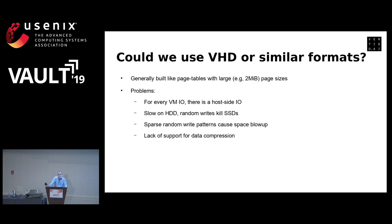We first thought about existing virtual machine storage formats like VHD from Microsoft, but they don't really solve this problem. They're built like page tables with bigger page sizes. The table is empty initially; when you do a write you allocate about 2 megabytes on disk and future writes go there. If you read from an empty page, you get zeros; from an allocated page you get the contents. The problem is it's just a level of indirection — it doesn't remove any of the IOs. If a VM is doing a hundred IOs, the host needs to deliver a hundred physical IOs.